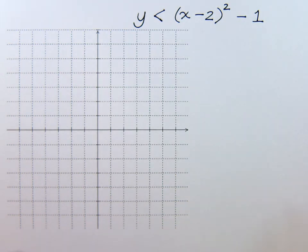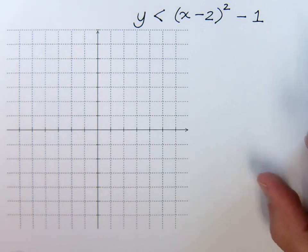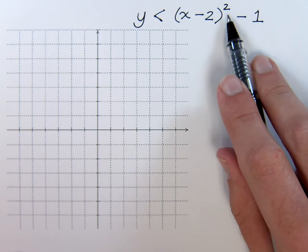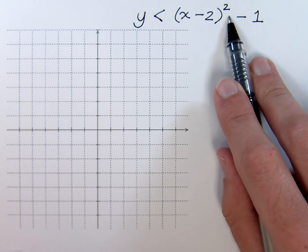Okay, let's look at graphing another inequality, except this time, let's make it non-linear. If we look at this guy, he's not just a normal line. This square guy gives it away. We know that he's a parabola.